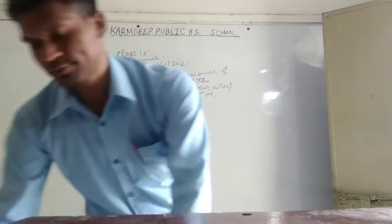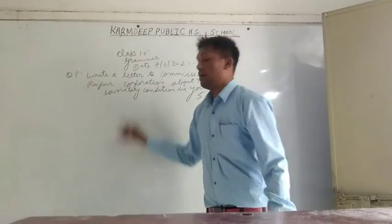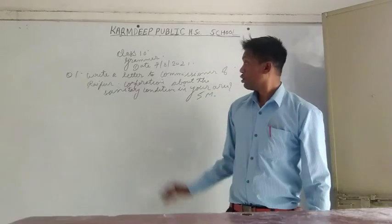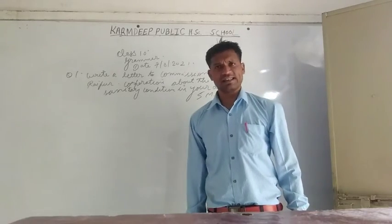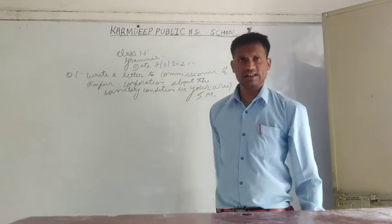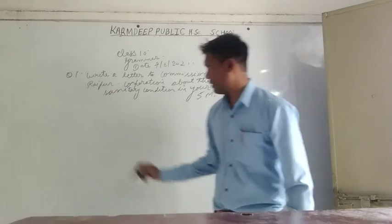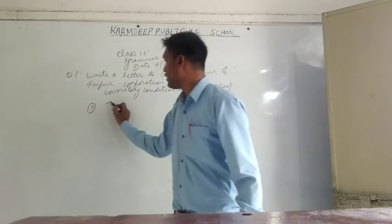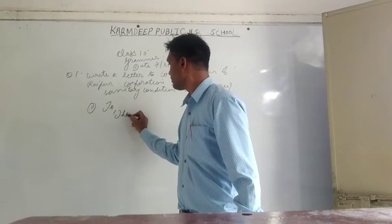Now I'll explain. See, the method I have told you — there must be any question asking, but we have to remember the seven parts. How? See, first is: to the Collector.